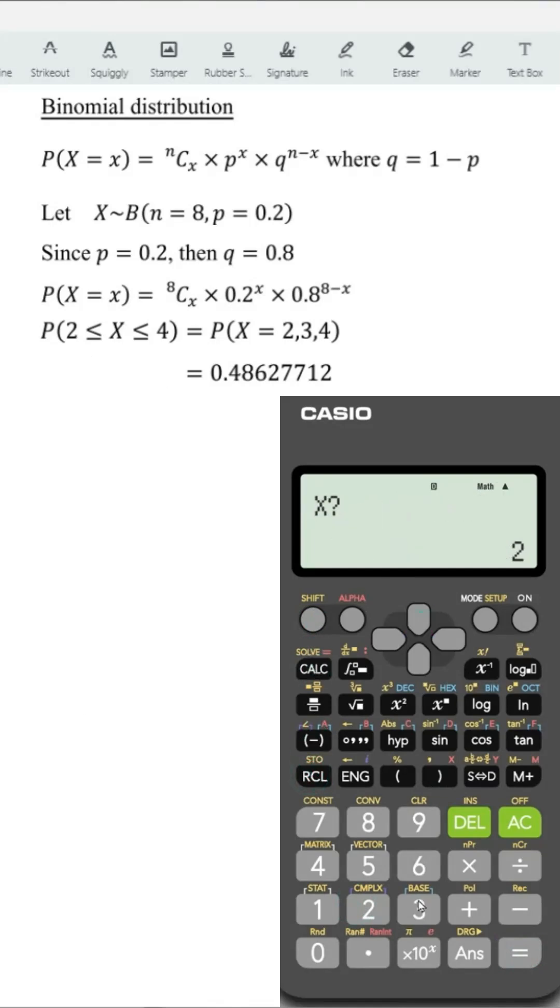Up, calculate when x is equal to 3. Press equal, shift, recall store to B.